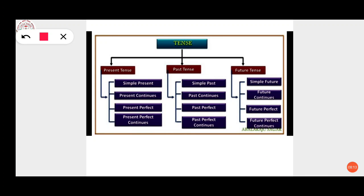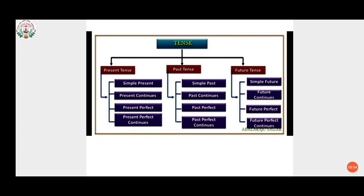We have present tense, past tense, and future tense, each divided into four categories. Present tense: simple present, present continuous, present perfect, and present perfect continuous. Past tense: simple past, past continuous, past perfect, and past perfect continuous. Future tense: simple future, future continuous, future perfect, and future perfect continuous. These are the twelve tenses.